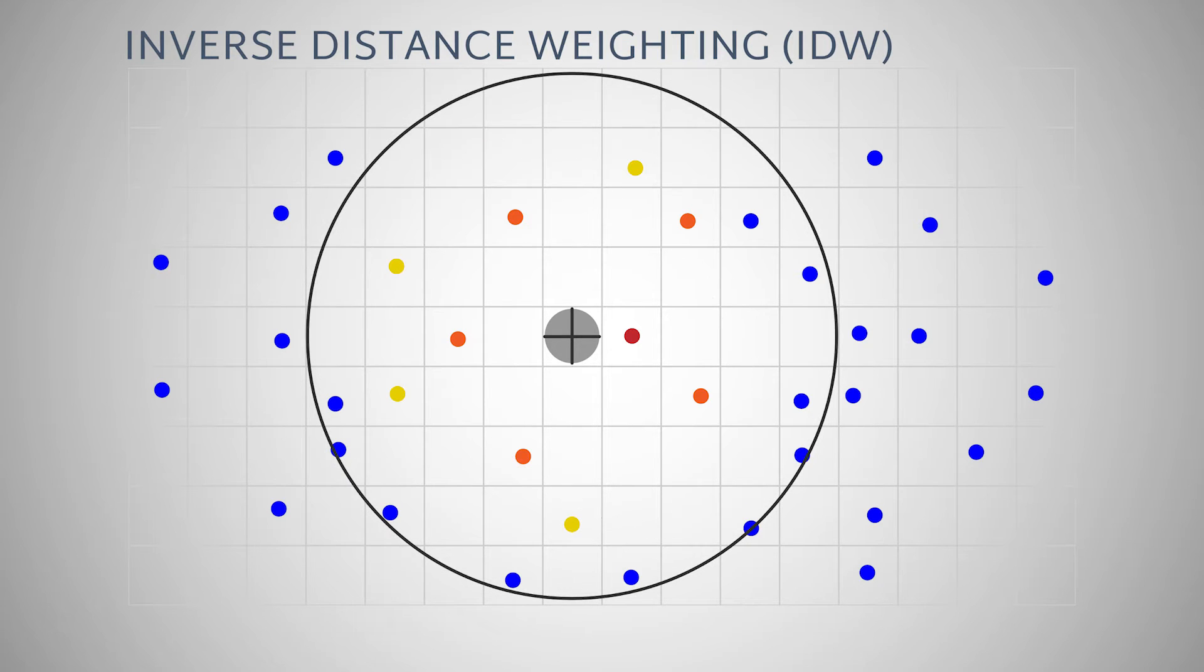This will restrict the number of measured values the GIS will use when calculating the value at the prediction point. You can also place a limit on the minimum and maximum number of locations to use within a search neighborhood to modify your results.